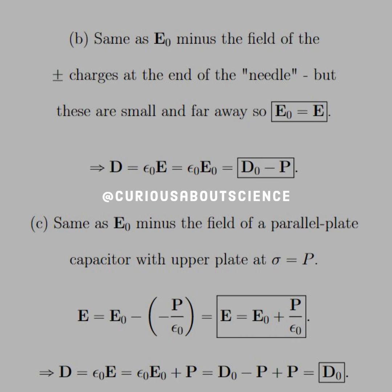Okay, so for part C, this is the same as E naught minus the field of a parallel plate capacitor with the upper plate at sigma equal P. We know that the parallel plate capacitor has a field of negative P over epsilon naught, so take the difference, and we're left with E equals E naught plus P over epsilon naught.